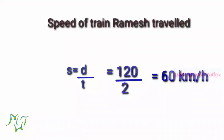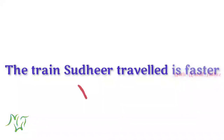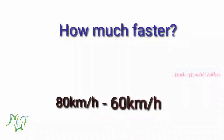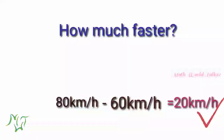So which train is faster? The train Sudhir traveled is faster because the speed of that train was 80 kilometers per hour. We also want to find how much faster it is. For that, we subtract 60 kilometers per hour from 80 kilometers per hour, so the answer is 20 kilometers per hour.